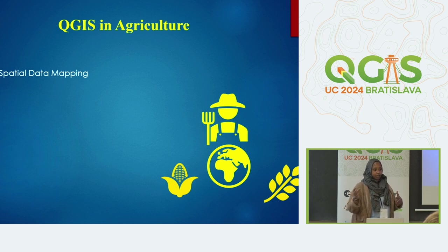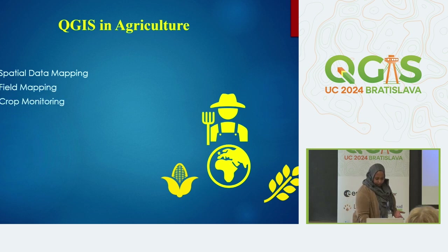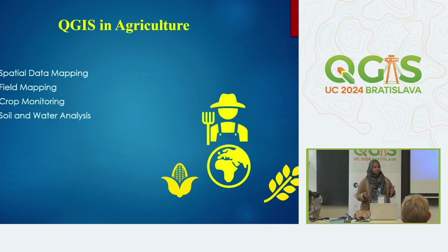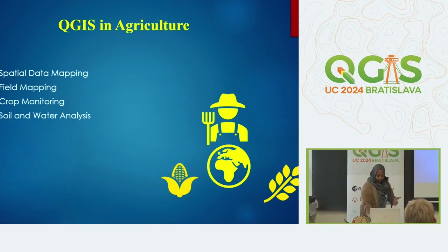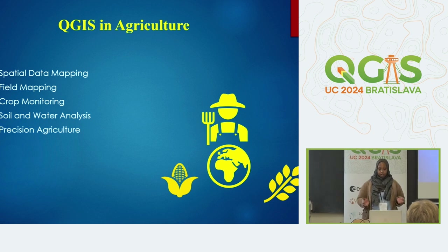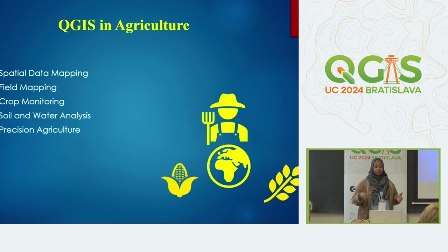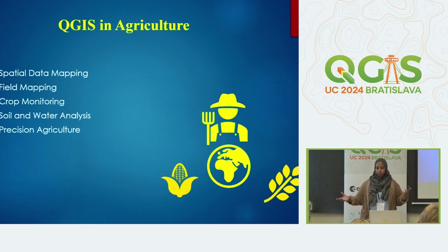QGIS also supports soil classification and mapping of soil moisture content. It can help in the analysis of agriculture, like monitoring crop growth and predicting stresses at early phenological stages. It also aids in precision agriculture — for instance, you can use clustering in QGIS to identify spatial differences in soil and water levels, and identify zones for irrigation and alter water demand, fertilizer input, and other soil management practices based on those differences.